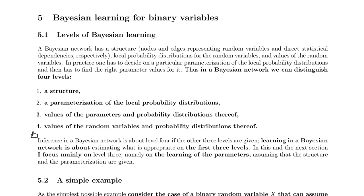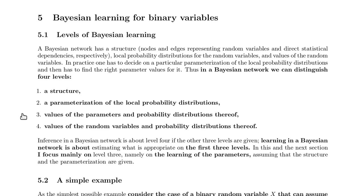And finally, the fourth level is actually sampling the values of the random variables, so doing inference in the network — and so far we were only concerned with number four. Now I want to say something about three, and that works towards learning in Bayesian networks.